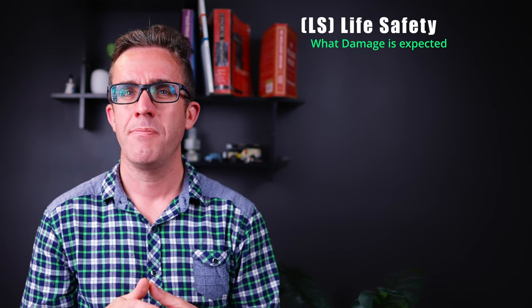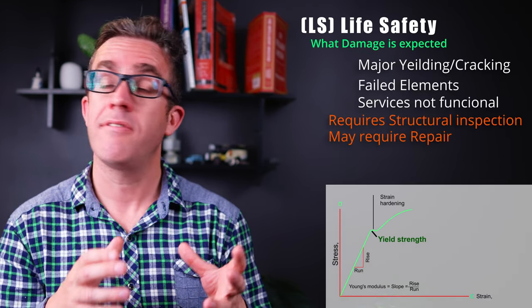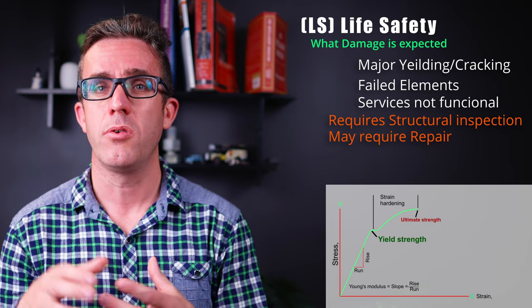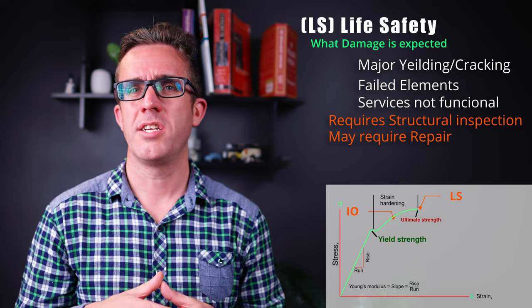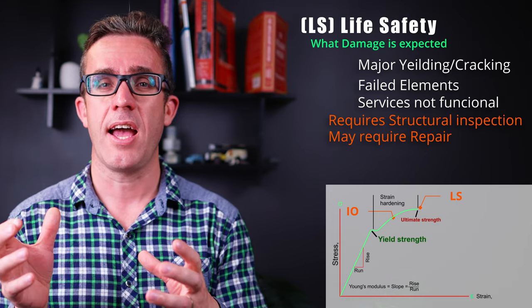The next level up for immediate occupancy is life safety performance. So, in this area, you have seen some of those plastic deformations. So, there's quite significant damage to the building. You'll typically observe some major cracking in the structure, but it wouldn't allow for specific elements to collapse.